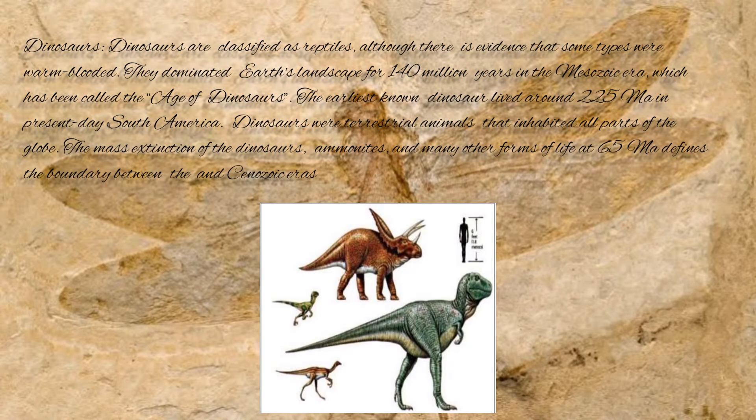Dinosaurs are classified as reptiles, although there is evidence that some types were warm-blooded. They dominated Earth's landscape for 140 million years in the Mesozoic era, which has been called the age of dinosaurs. The earliest known dinosaur lived around 225 million years ago in Cretaceous South America. Dinosaurs were terrestrial animals that inhabited all parts of the globe. The mass extinction of the dinosaurs, ammonites, and many other forms of life at 65 million years ago defines the boundary between the Mesozoic and Cenozoic eras.